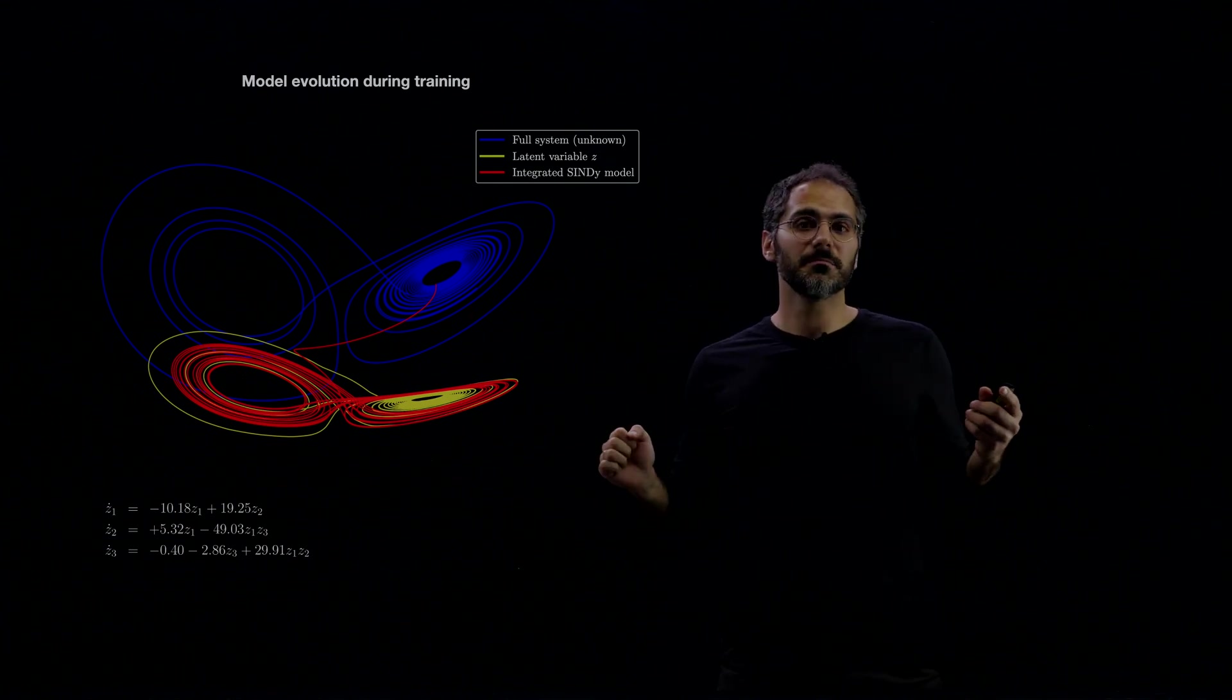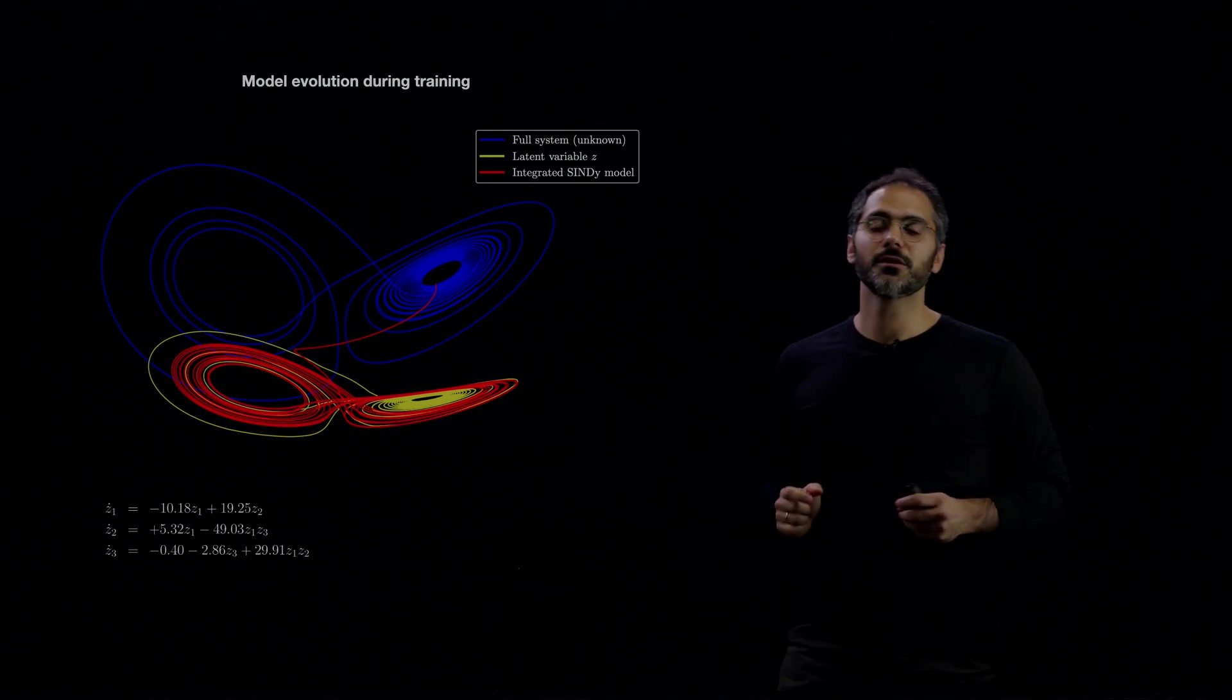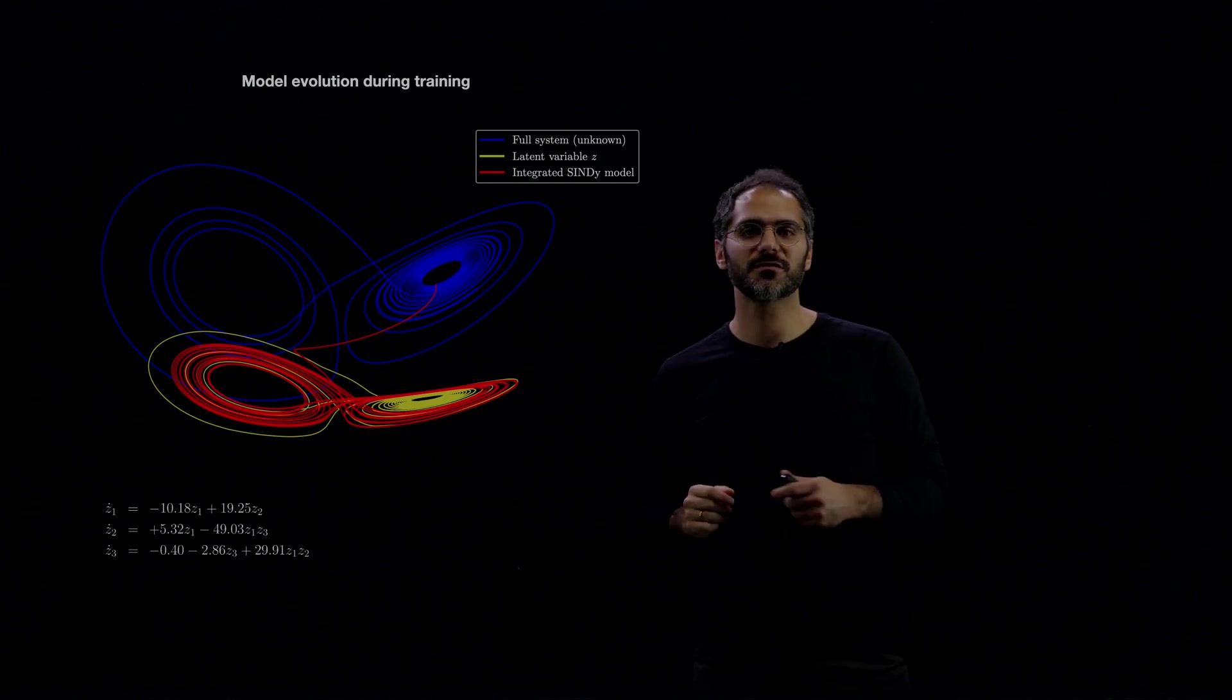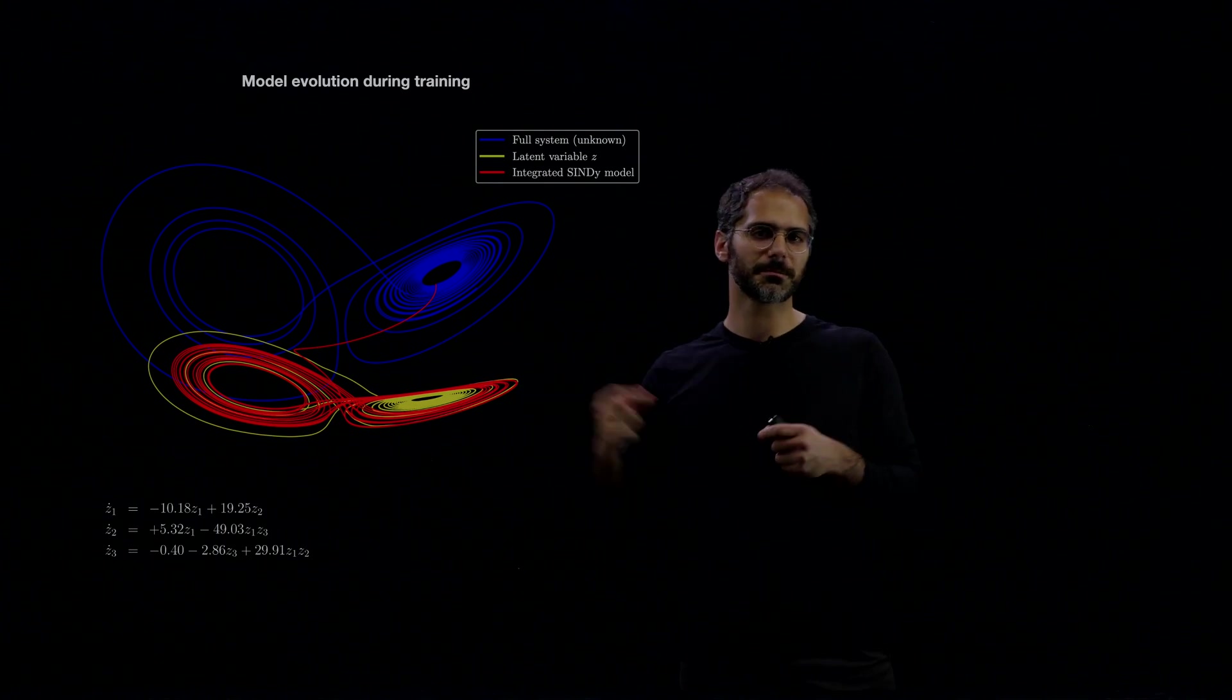But given a system if you know for example that the energy is conserved you can bake in those symmetries and physics informed symmetries in the loss function and therefore improve that discovery and get it closer and closer to the original system.